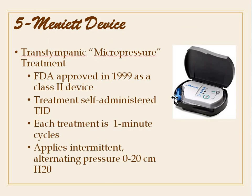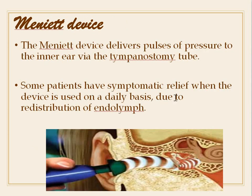The Meniett device provides intratympanic micropressure treatment, FDA approved in 1999 as a class 2 device. Treatment is self-administered three times daily, each treatment being a one-minute cycle applying intermittent alternating pressure of 0 to 20 cm of water. The device delivers a pulse of pressure to the inner ear via a tympanostomy tube, and some patients experience symptomatic relief due to redistribution of endolymph.